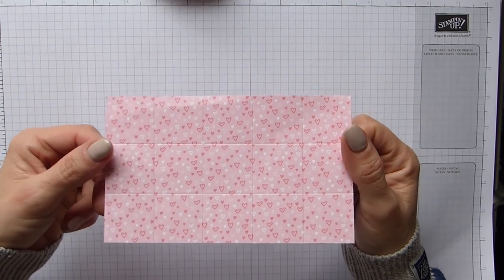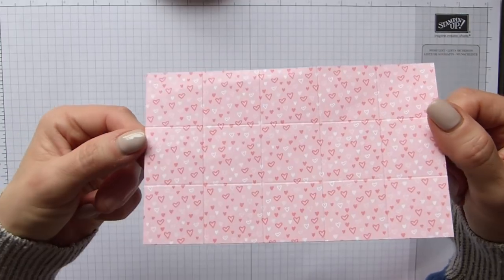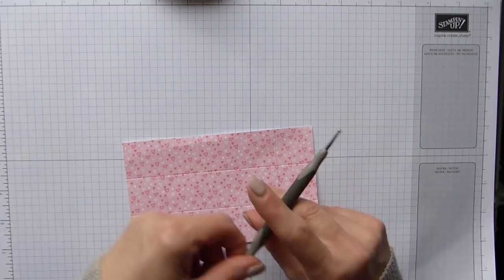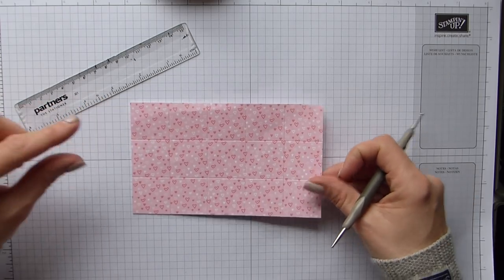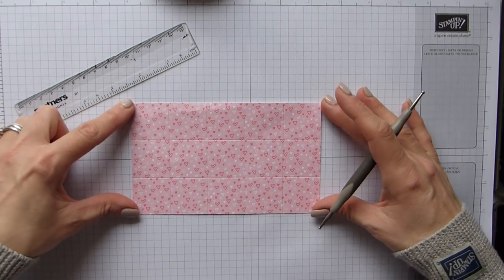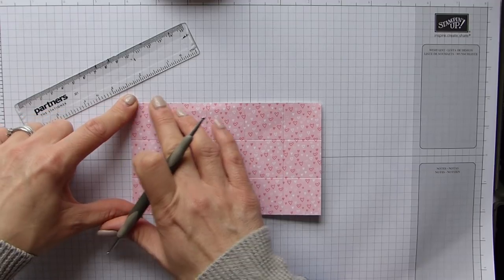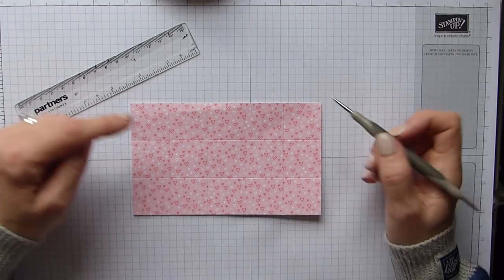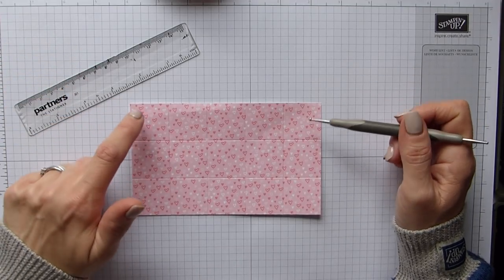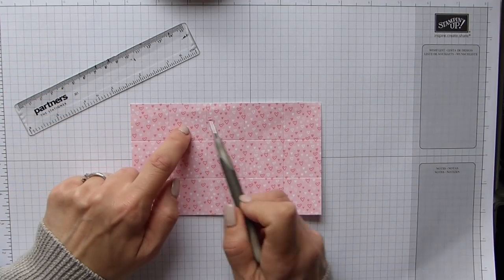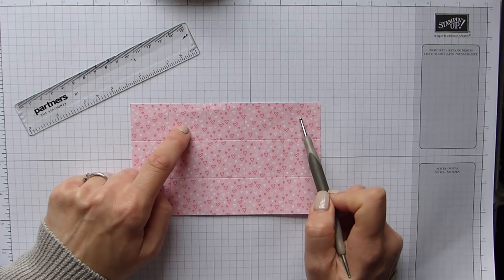Okay, so once you've got all those nice score lines in place and you've got a nice grid going on, we then need to add our own diagonal lines. So if you have your DSP as I have mine, so you've got your six and a quarter across the top, in these boxes here, so basically it's miss a box, score, miss a box, score, miss a box.